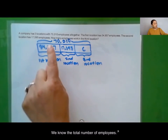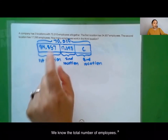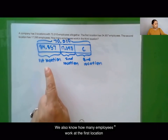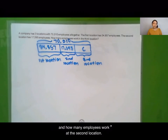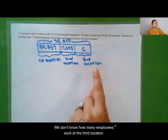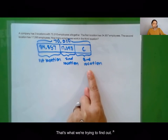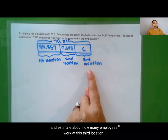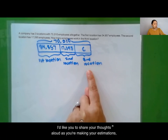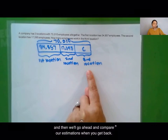We know the total number of employees. We also know how many employees work at the first location and how many work at the second location. We don't know how many employees work at the third location — that's what we're trying to find out. Pause the video here and estimate about how many employees work at the third location, sharing your thoughts aloud. We'll compare estimations when you get back.